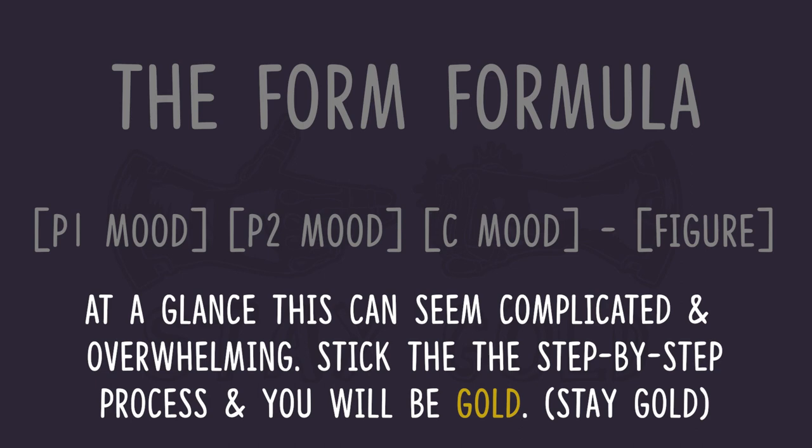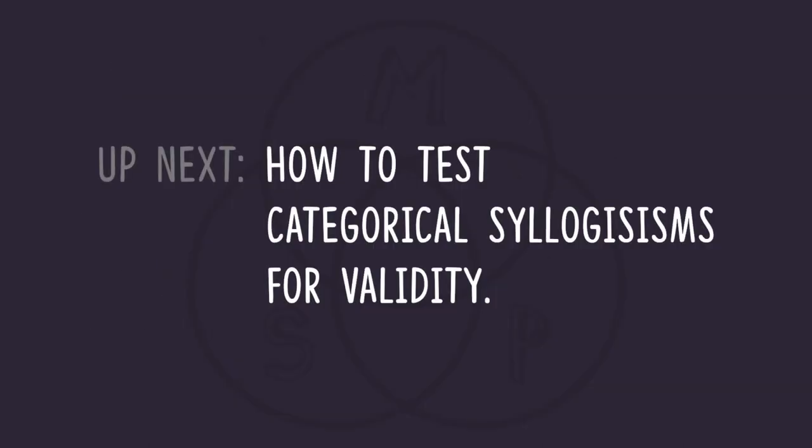This is very straightforward, but you do need to know how the rules work. Once you do, things should fit into place. In our next video we're going to look at how we can use Venn diagrams to evaluate the validity of any given categorical syllogism. I'll see you then.